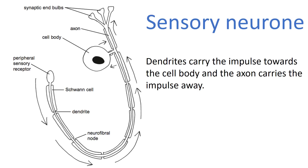To summarize: sensory neurons are afferent, taking information in. They also have Schwann cells and neurofibral nodes, which greatly increase the rate of neuronal transmission, as is also the case with motor neurons.